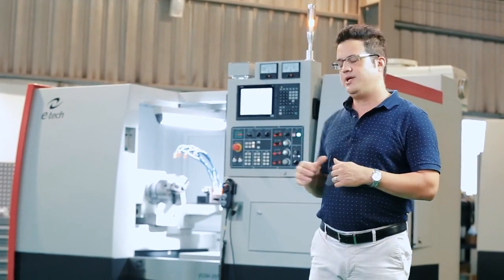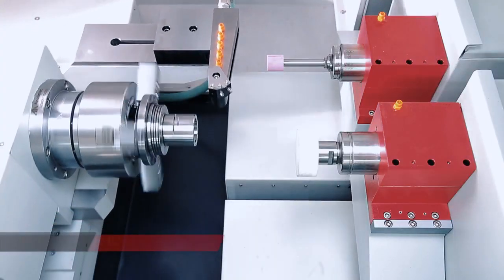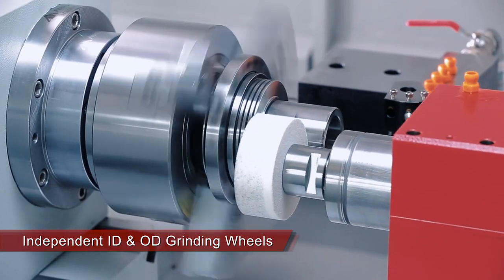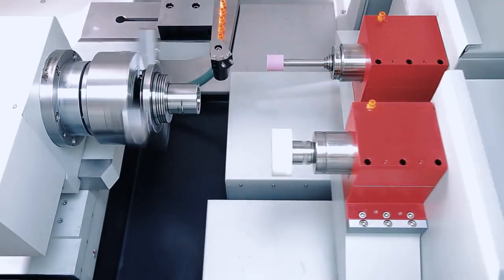Now this is the EGM-350CNC. It's a two-spindle system with OD and ID grinding, and it's made for complex parts, grinding parts in one setup.